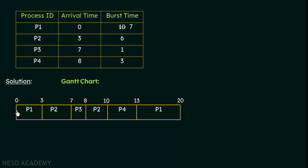P2 begins execution at the 3rd millisecond with a burst time of 6 ms. The next process to arrive is P3 at the 7th millisecond. At that point P2 has executed for 4 ms (from 3 to 7), so its remaining burst time is 2 ms. P3 has a burst time of only 1 ms, which is smaller than P2's remaining 2 ms, so P2 is preempted and P3 is given the CPU.